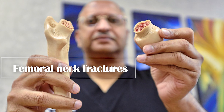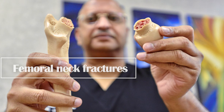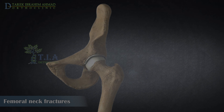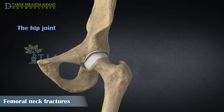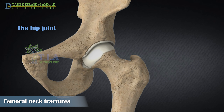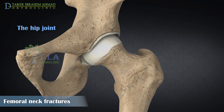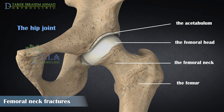Femoral neck fractures. The hip joint is a ball and socket joint consisting of the acetabulum and the femoral head. The femoral neck connects the femoral head to the proximal portion of the femoral shaft and attaches to the intertrochanteric region.